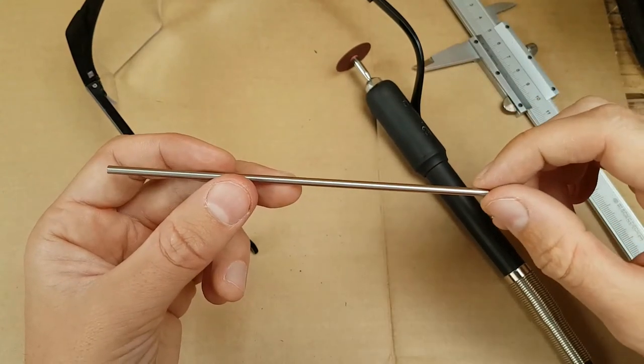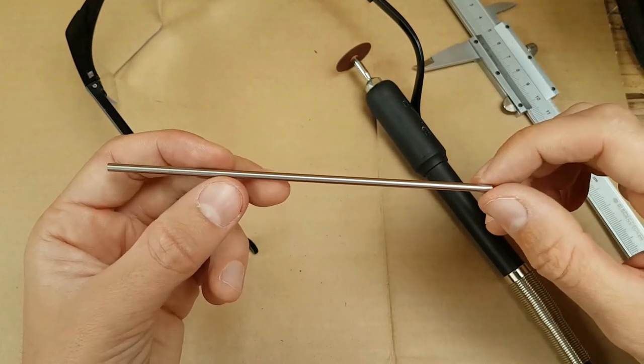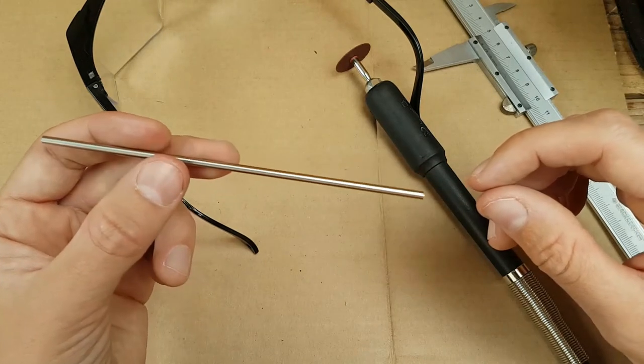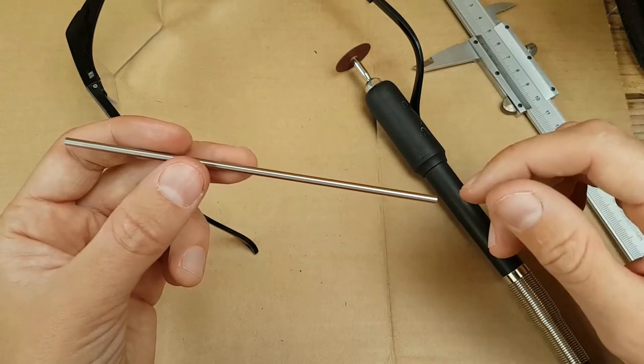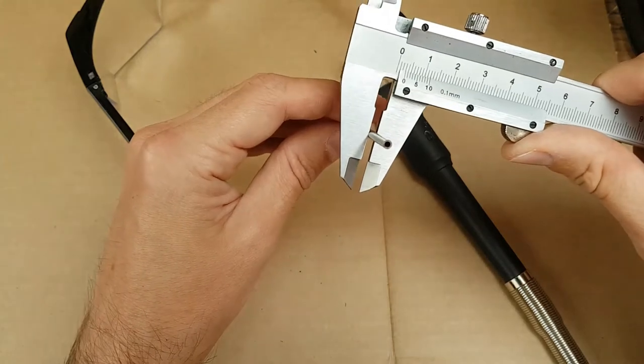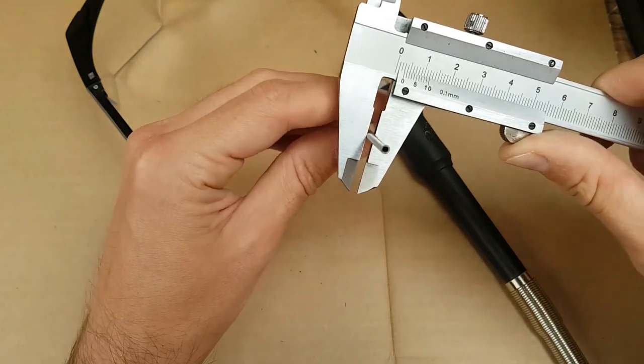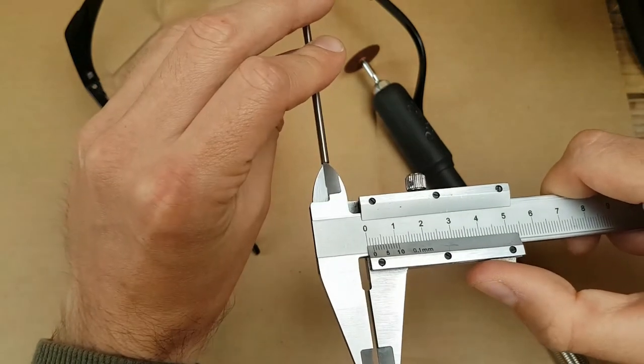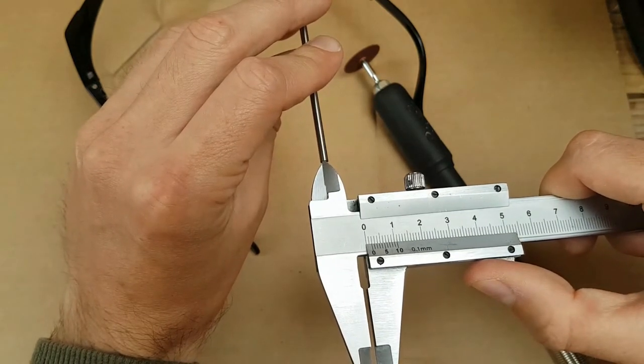Okay guys, we are making another bobbin holder today. This time it's not going to be from wire, it's going to be from a tube - normal stainless steel tube. The diameter of the tube is three millimeters and the inner diameter is around 1.7 millimeters.